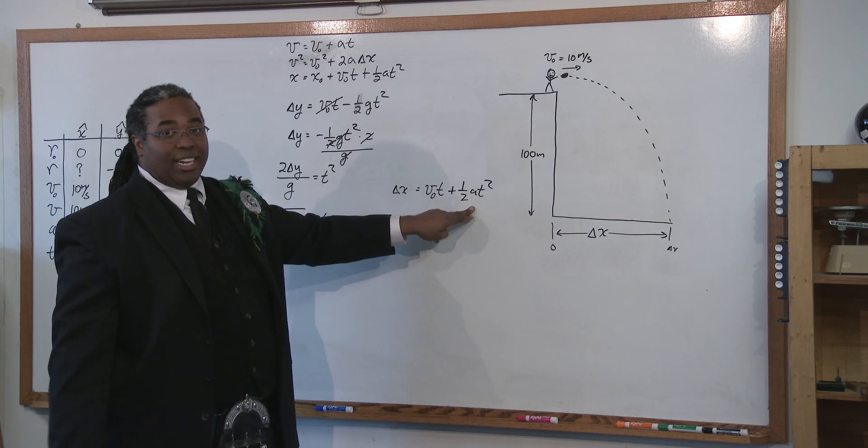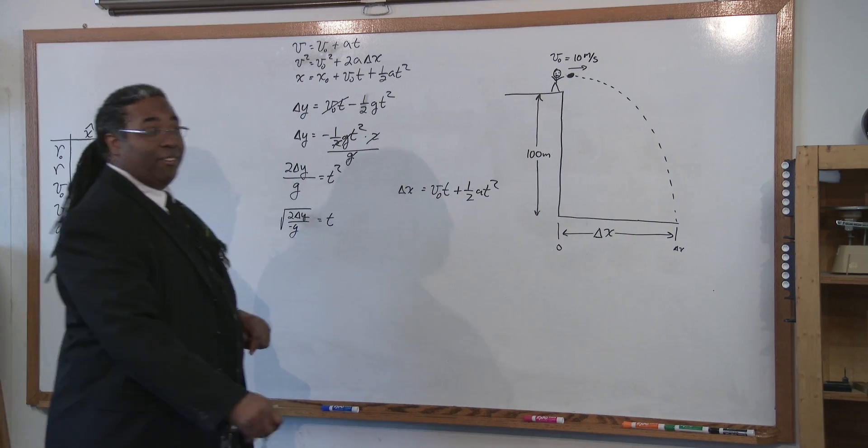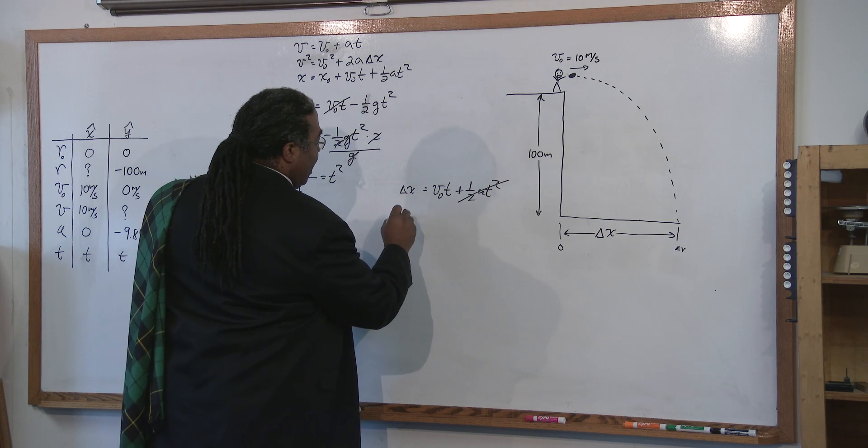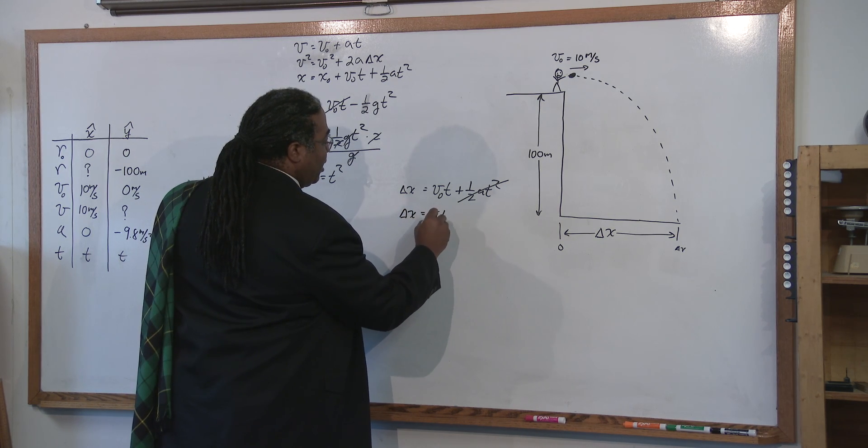So therefore, delta x equals v naught t plus one half at squared. What's the acceleration in the x direction? Oh wow, it's zero. So therefore, this term goes to zero. So now we have delta x equals v naught t.